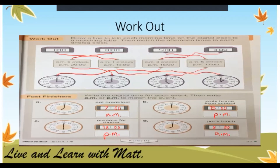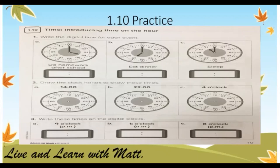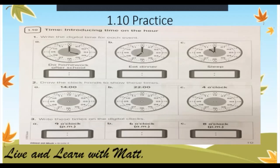Now let's go on to Practice 1.10. Number 1A: write the digital time for each event. Do homework after school — we write 16 o'clock. Part B: 19 o'clock. Part C: sleep — 23. Number 2: draw the clock hands to show these times. I would like you to do number 2 and number 3 in your practice book and send it to the teacher's line.